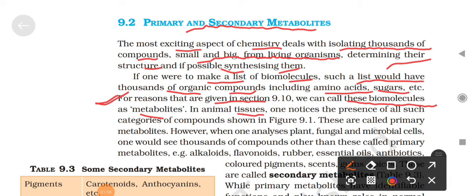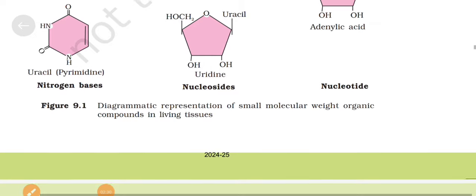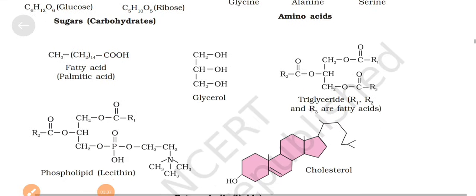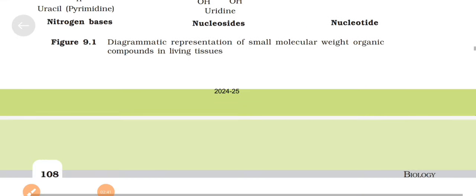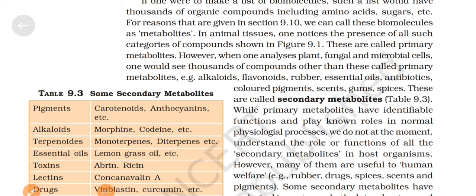In animal tissues, one notices the presence of all such categories of compounds shown in figure 9.1. We have already read those details from part one. In animal tissues we have got categories of compounds - amino acids, sugars, fats, oils, nucleoside, nucleotide, nitrogen base. All these details we have seen. These are called primary metabolites.